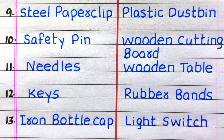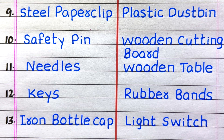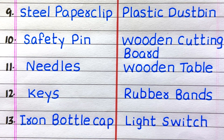The 9th example of a metal is steel paper clip. 10th, safety pin. 11th, needles. 12th, keys. 13th, iron bottle cap.